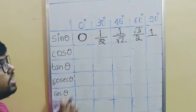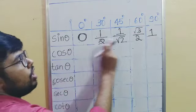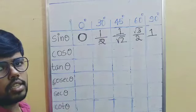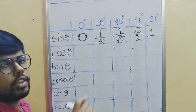cosec, secant, and cot, and all the degrees. Just remember the value of sine - sine values: zero, one by two. Just remember this; once you remember this, rest everything